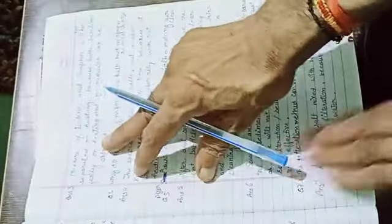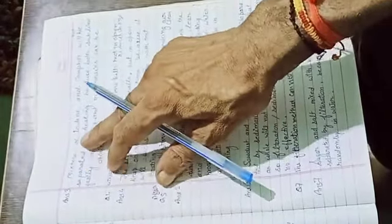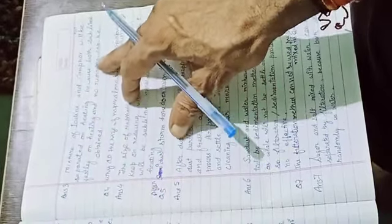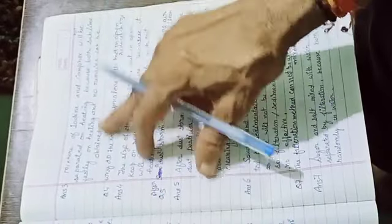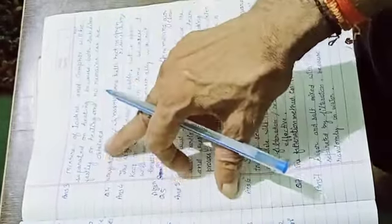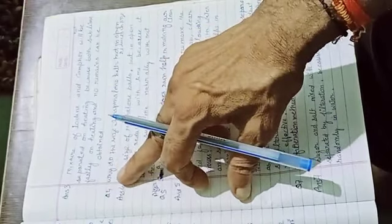Mixture of iodine and camphor will be separated on heating because both sublime fast on heating and no residue can be obtained. Question four.